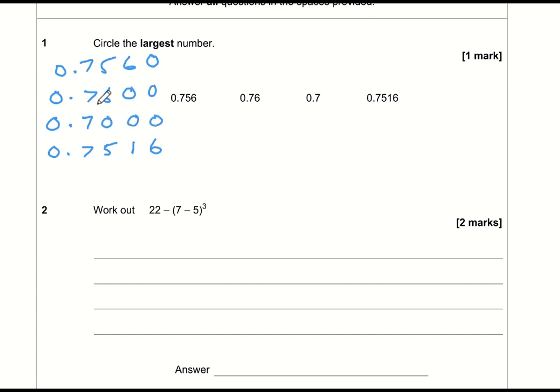Now they are all the same length. If we look at the units column, 0, 0, 0, 0, so there's no way to tell them apart. In the tenths column we've got 7, 7, 7, 7. But in the hundreds column we've got 5, 6, 0, and 5. Well, 6 is the biggest, so this must be the greatest number: 0.76, which is the second option.